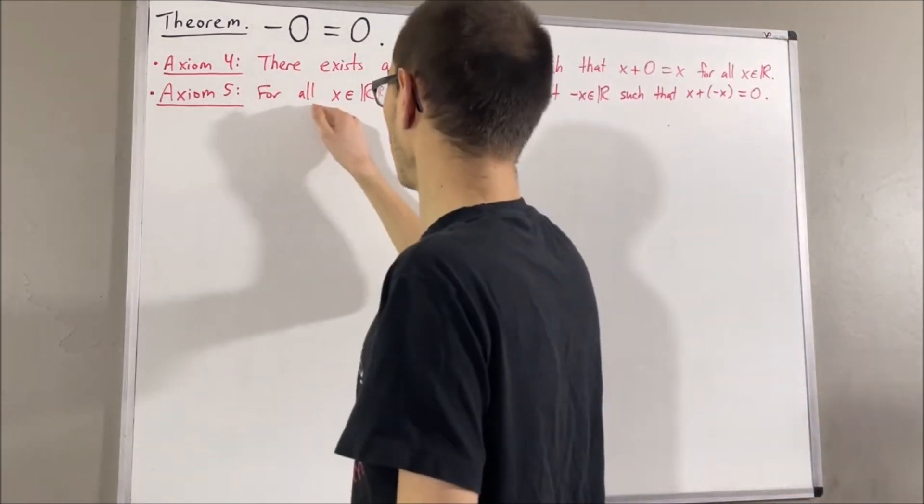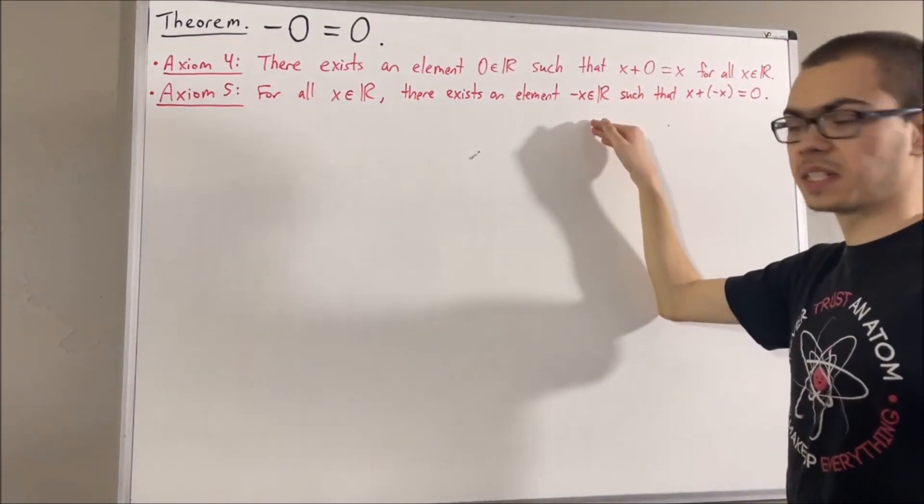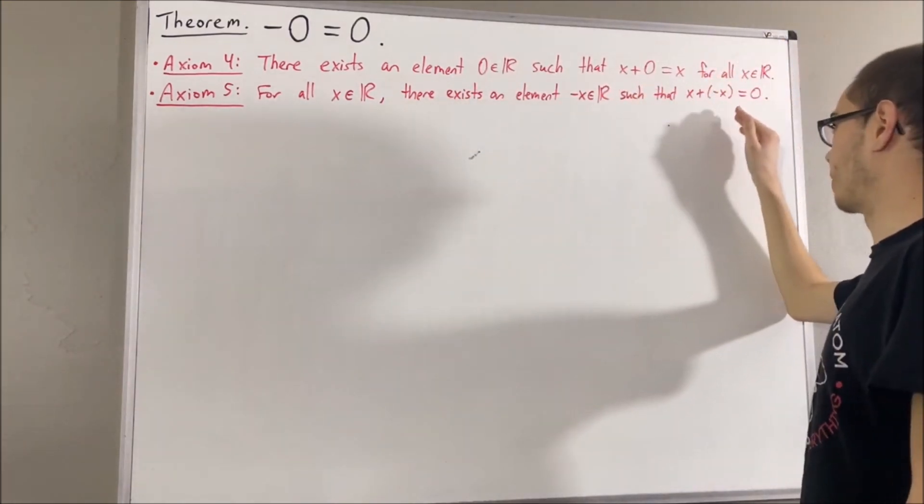And axiom 5 tells us, for all real numbers x, there exists a real number, which we call negative x, that has the property that x plus negative x is equal to zero.